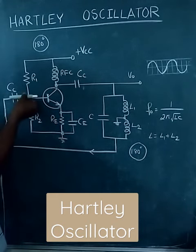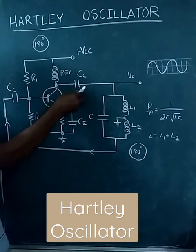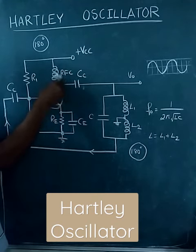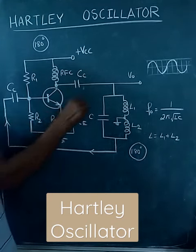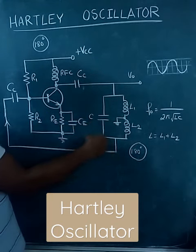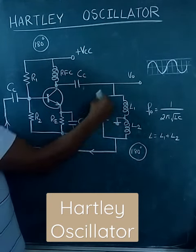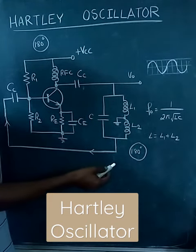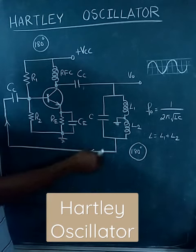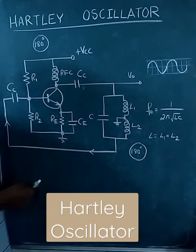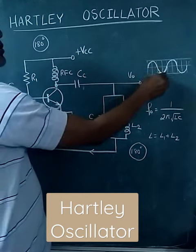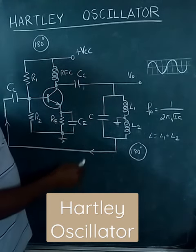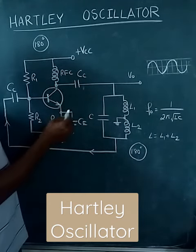The input signal is given to the base and the output is taken at the collector. This will introduce 180 degrees out of phase, and once again it passes through the tank circuit, which will introduce another 180 degrees out of phase, so totally it gives 360 degrees out of phase.